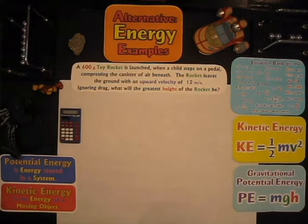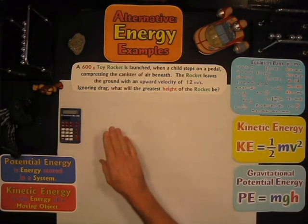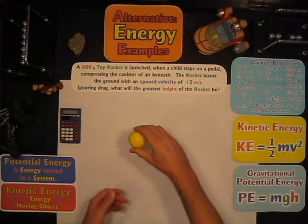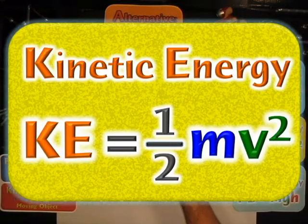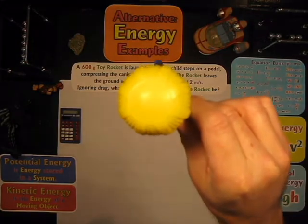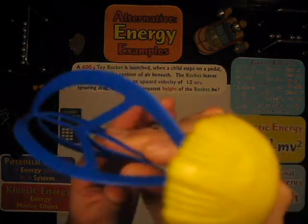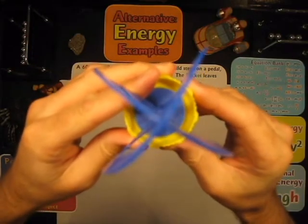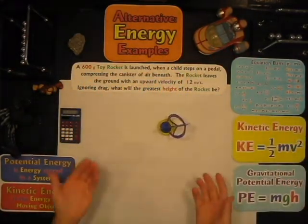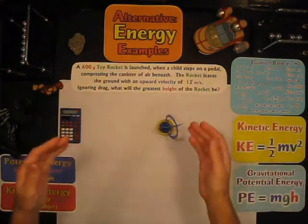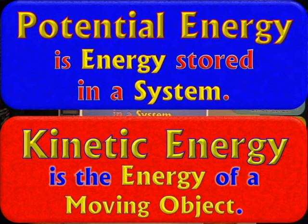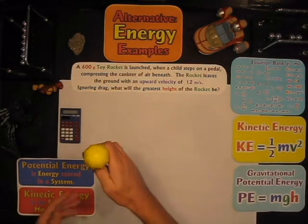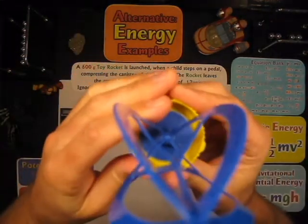If you calculate the energy that rocket has, you can actually solve this problem. Ignoring drag, imagine when the rocket is first launched — it has kinetic energy going upwards. Eventually it's going to reach its greatest height, and at that moment its velocity will be zero. It would actually flip over at that point. And then it's going to fall back to the ground. What you're seeing is the energy changing — there's potential energy and kinetic energy.